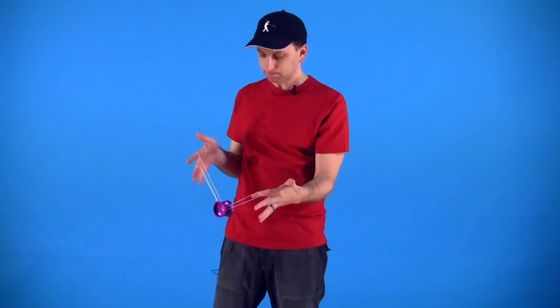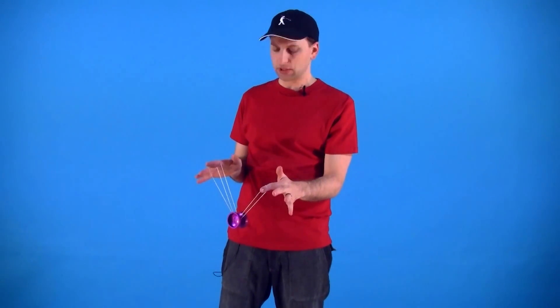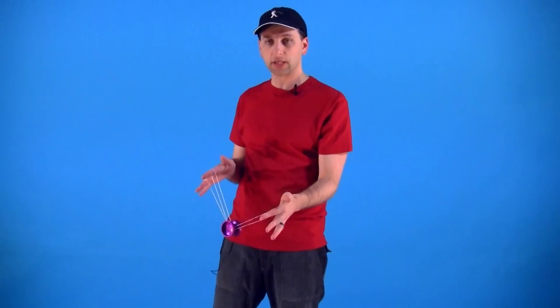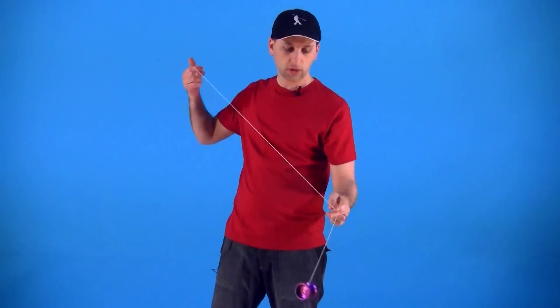It is actually the same as the Mach 5 mount except it is on the side mount. This is the mount that leads into the trick Kamikaze, but we are going to show it to you as a separate video because it is actually a trick that leads into a whole bunch of other tricks as well.